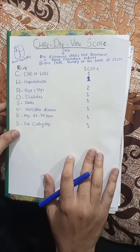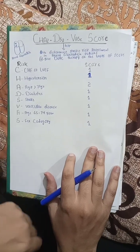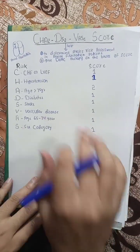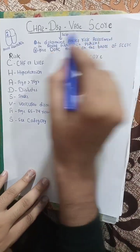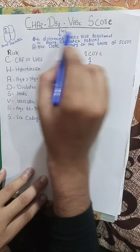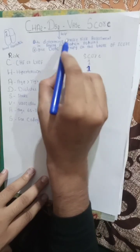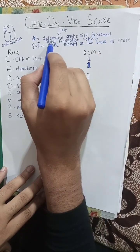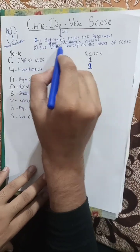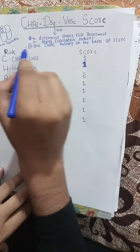Assalamu alaikum, welcome Dr. Yusuf Lakshas. Today's lecture is about the CHA2DS2-VASc score, which basically helps to determine stroke risk assessment in atrial fibrillation patients.